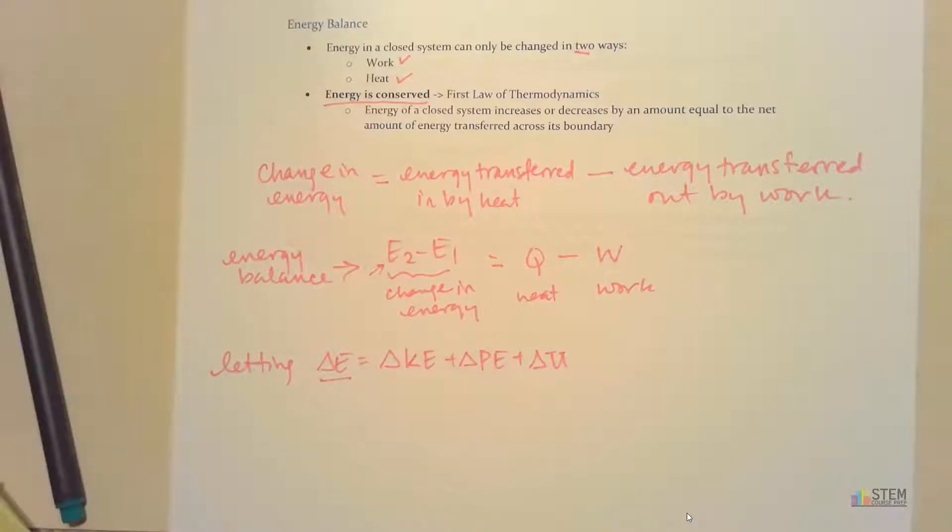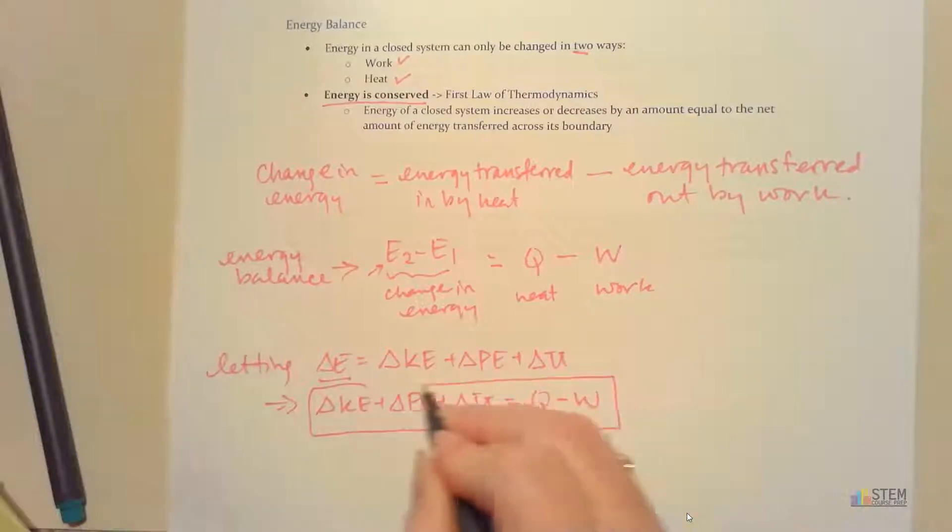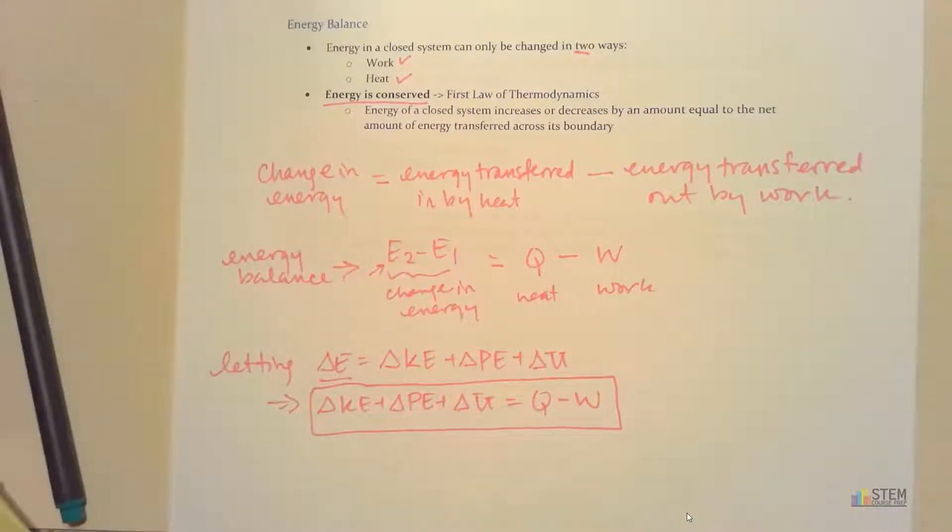That means we can combine these two equations to get delta KE plus delta PE plus delta U equals Q minus W. This gives us what's called our energy balance equation.